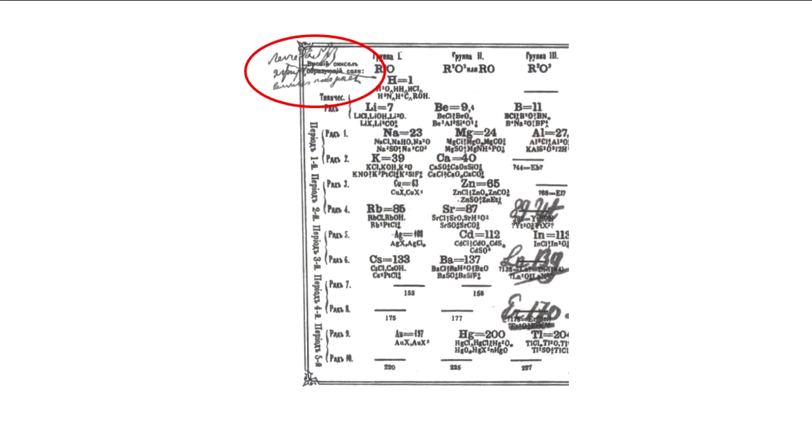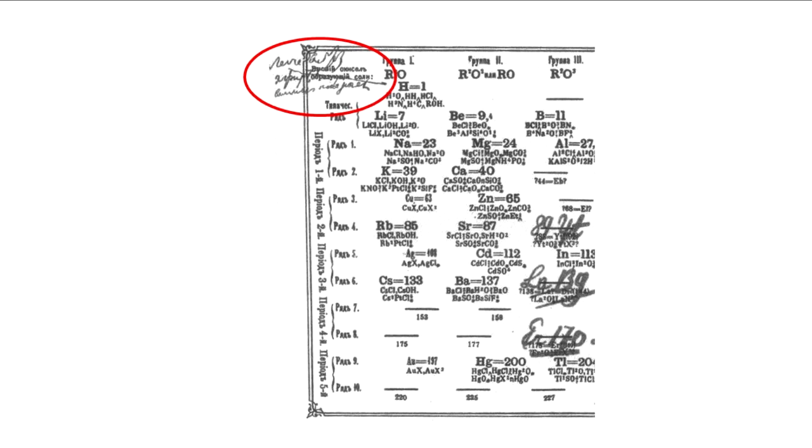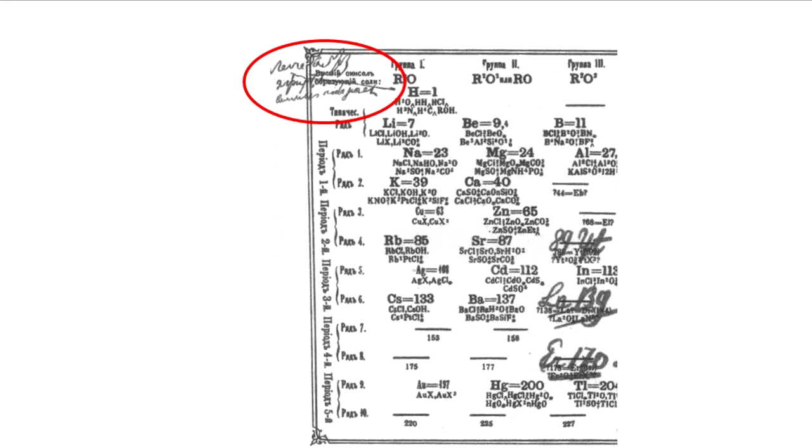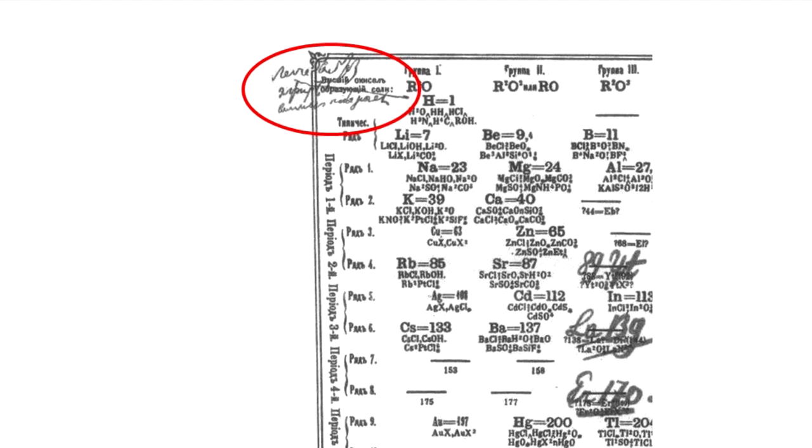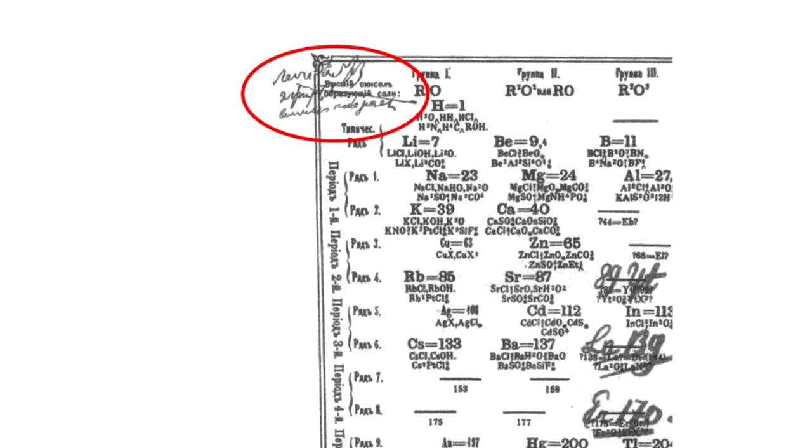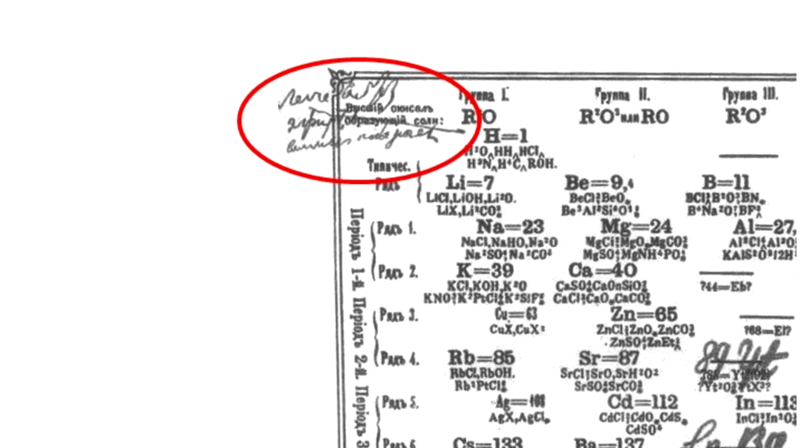And so Dmitry Mendeleev in 1871 scribbled some handwritten notes in the top left corner of one of his own periodic tables. And this note essentially indicates the ether is a million times lighter than the other elements. And so he had made a note there to hold a place in that top corner of the table for when he finally was able to, or humanity was finally able to discover, the luminiferous ether.